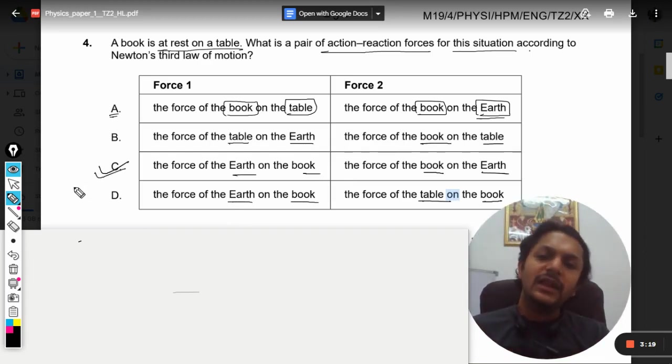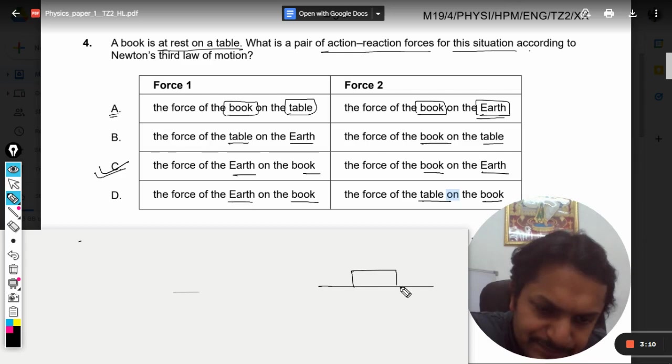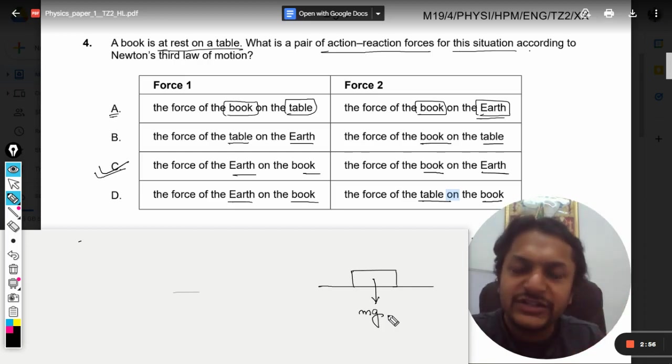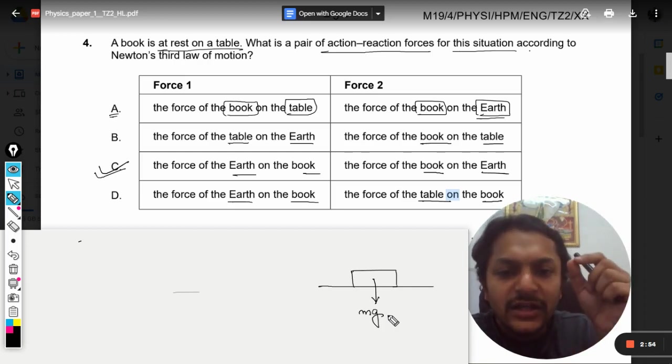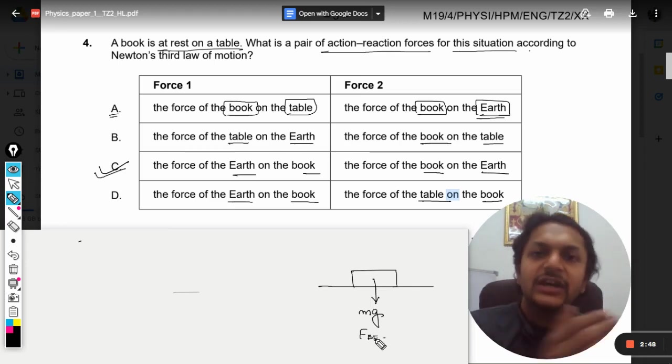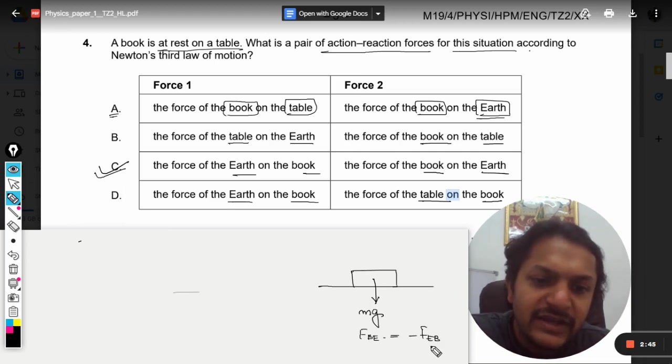Now if I give you the explanation of this, try to understand what is happening here. This is the table and this is the book. Now this book is being acted upon by a force which is mg. So firstly there is a force on the book by the earth, so I can say this is the force on the book by the earth.